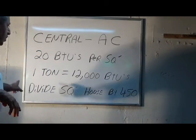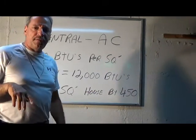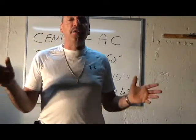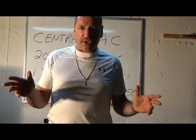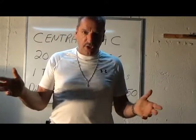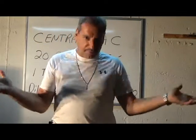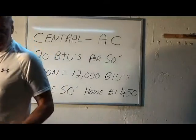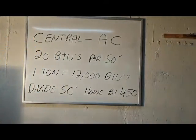That'll help you big time with figuring out a house real quick with air conditioning. Square footage of the house divided by 450 gives you the tonnage — that's how you purchase air conditioning: 3 ton unit, 4 ton unit, 5 ton unit, what have you.